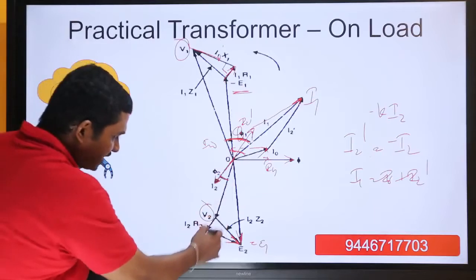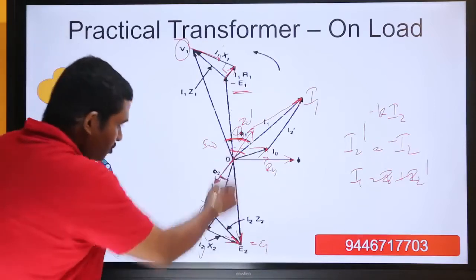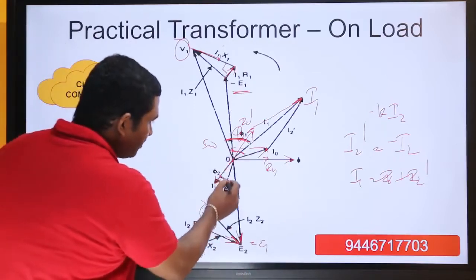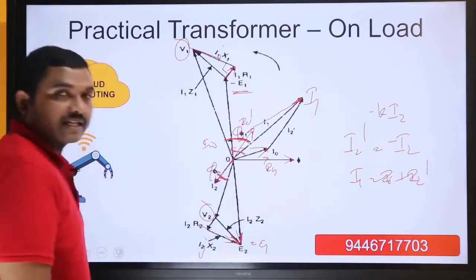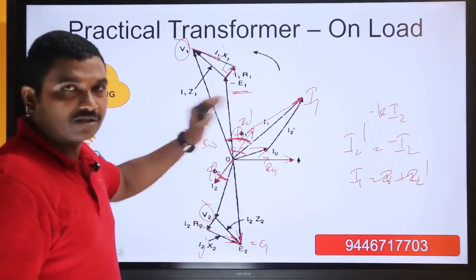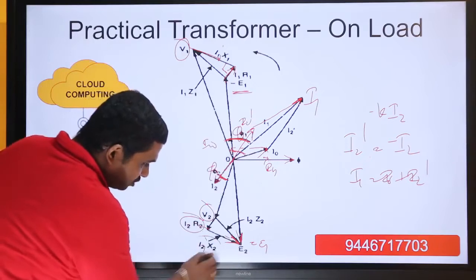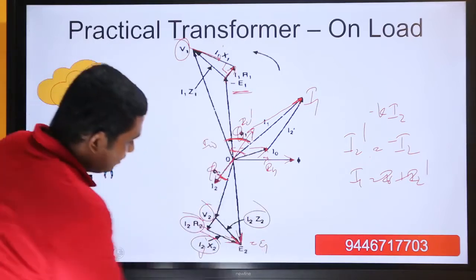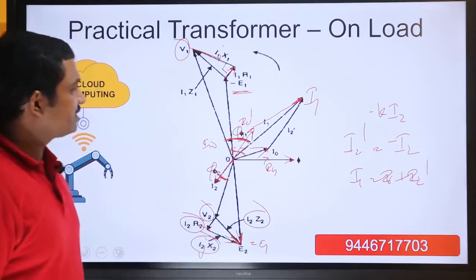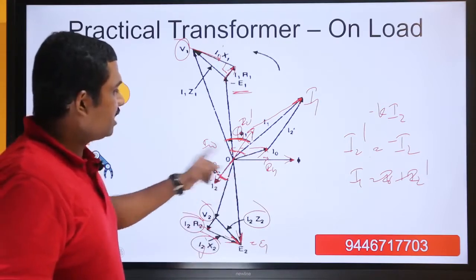This expression can be rewritten as: v2 plus i2 r2 plus i2 j x2 equals e2. So e2 becomes the closing side. The angle between i2 and v2 is called phi2, the secondary power factor angle, cos phi2. Also, i2 r2 plus i2 j x2 can become i2 z2, so you can draw a diagonal vector closing i2 r2 and i2 j x2. This is the complete phasor diagram of the practical transformer on load.